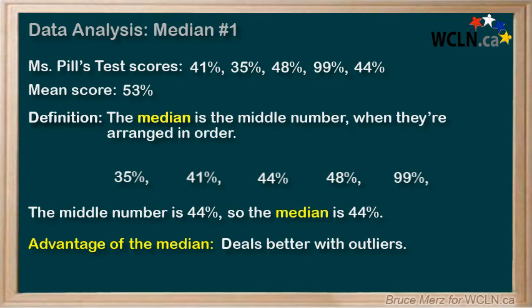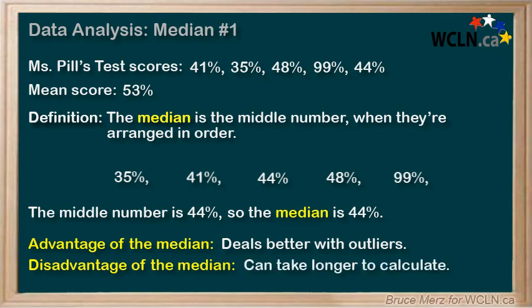For example, what if you're wondering about the average height in your class, and one of the students is 7 feet tall? No problem — the median wouldn't be affected by that extreme height. The disadvantage of using the median, however, is simply that it might take a bit longer to calculate, because you first have to put everything in order.